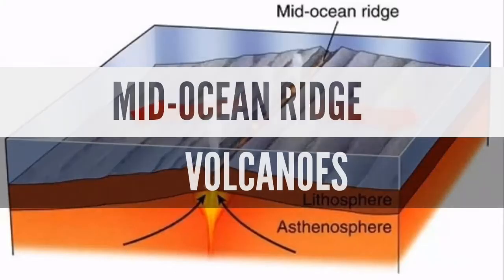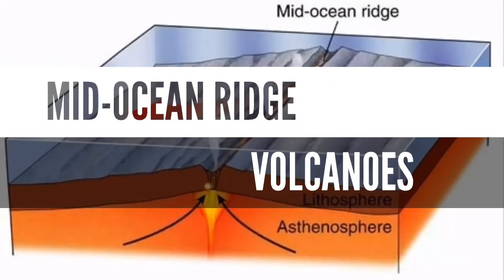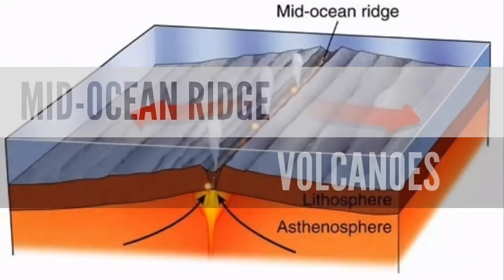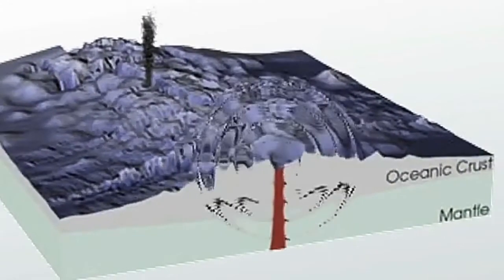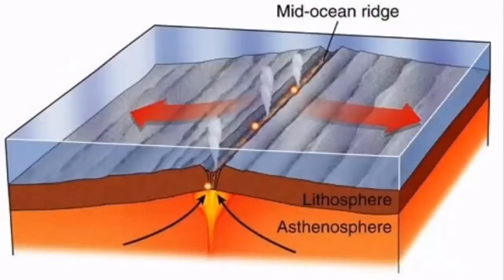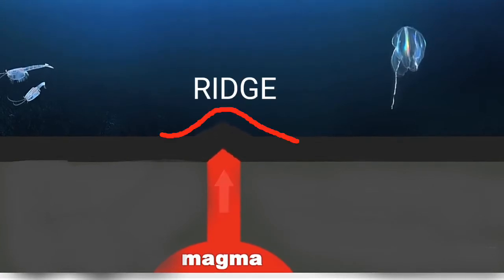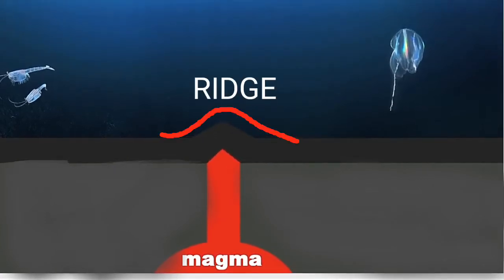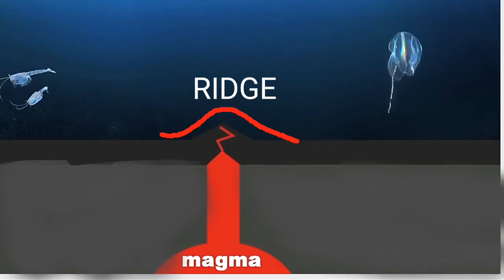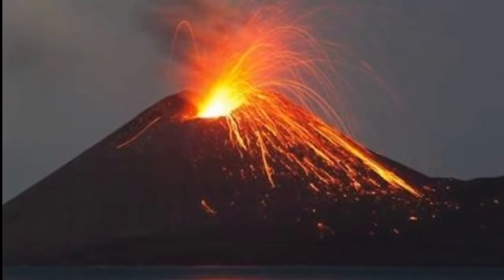The last type of volcanoes are the mid-ocean ridge volcanoes. These volcanoes mainly occur in the oceanic areas. Sometimes, due to tremors or earthquakes, the two plates in the oceanic crust have the tendency to move apart from each other. When the two plates move apart, the magma below has the tendency to move upward, thus forming a ridge. The central portion of this ridge experiences frequent eruptions.